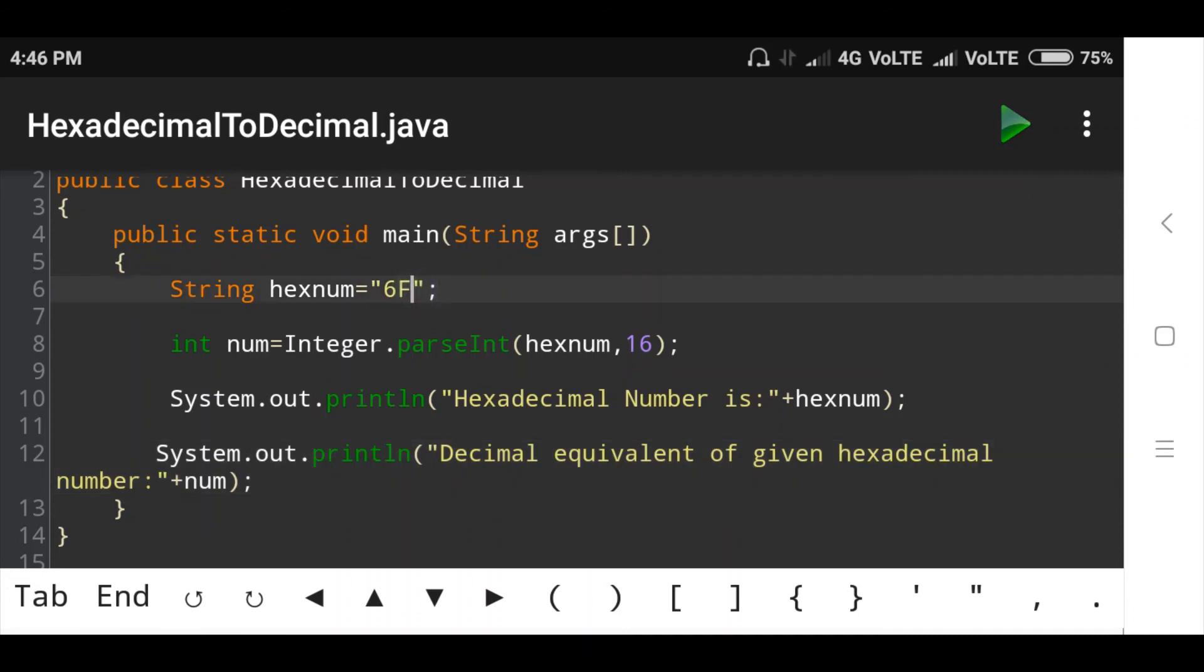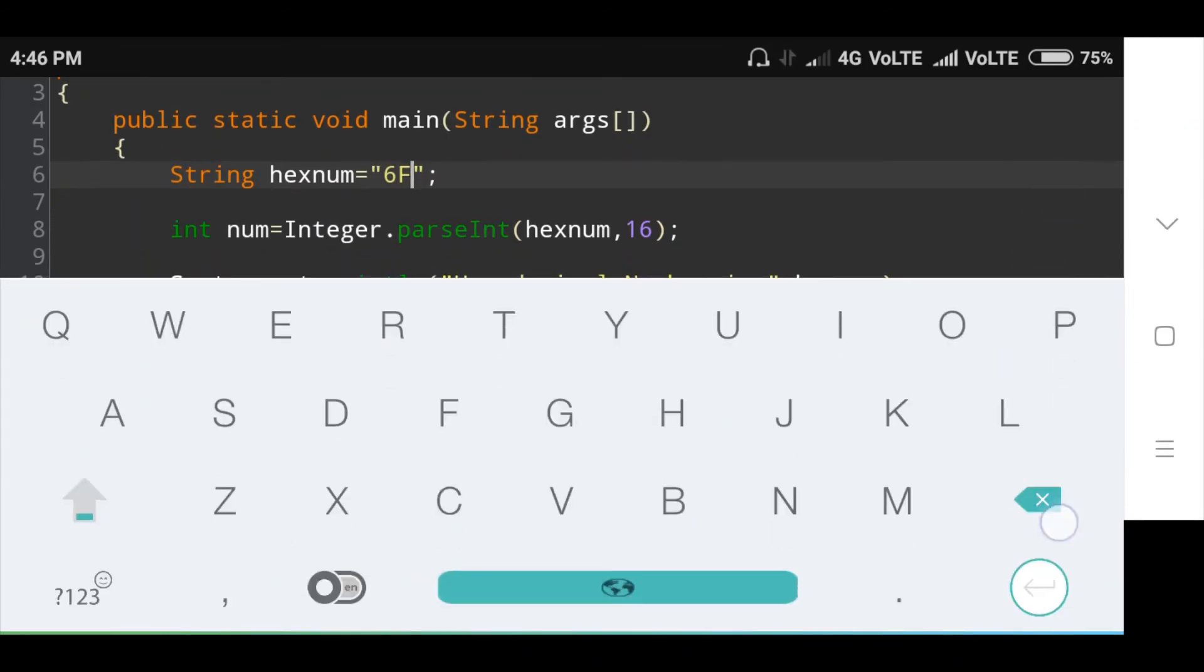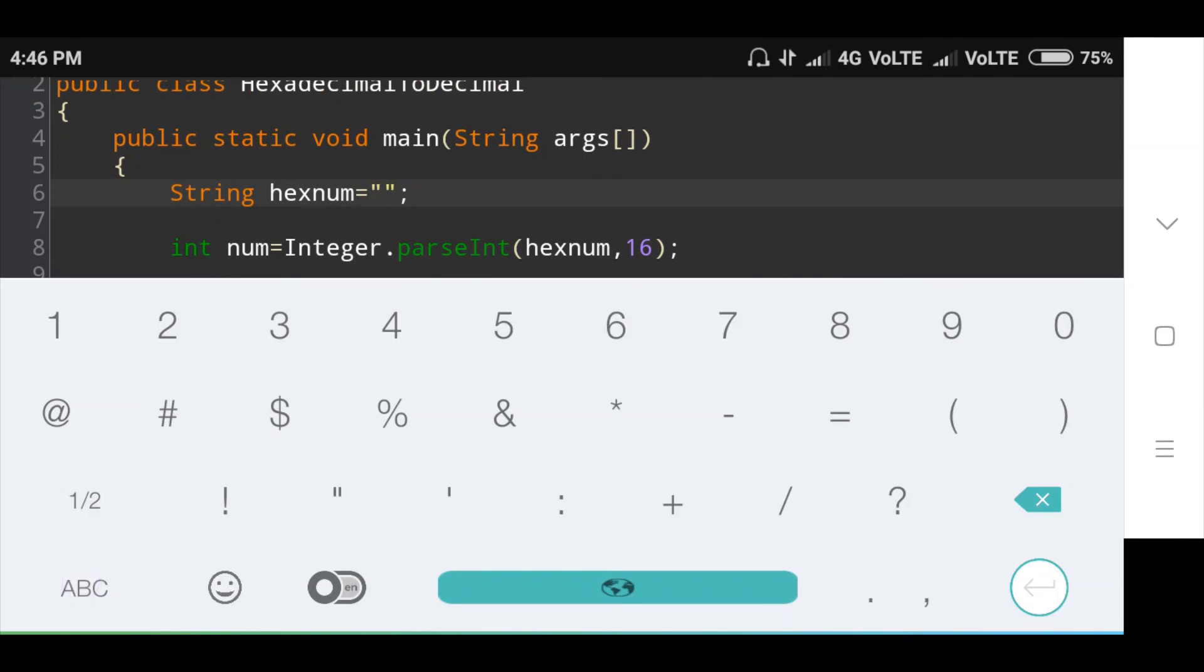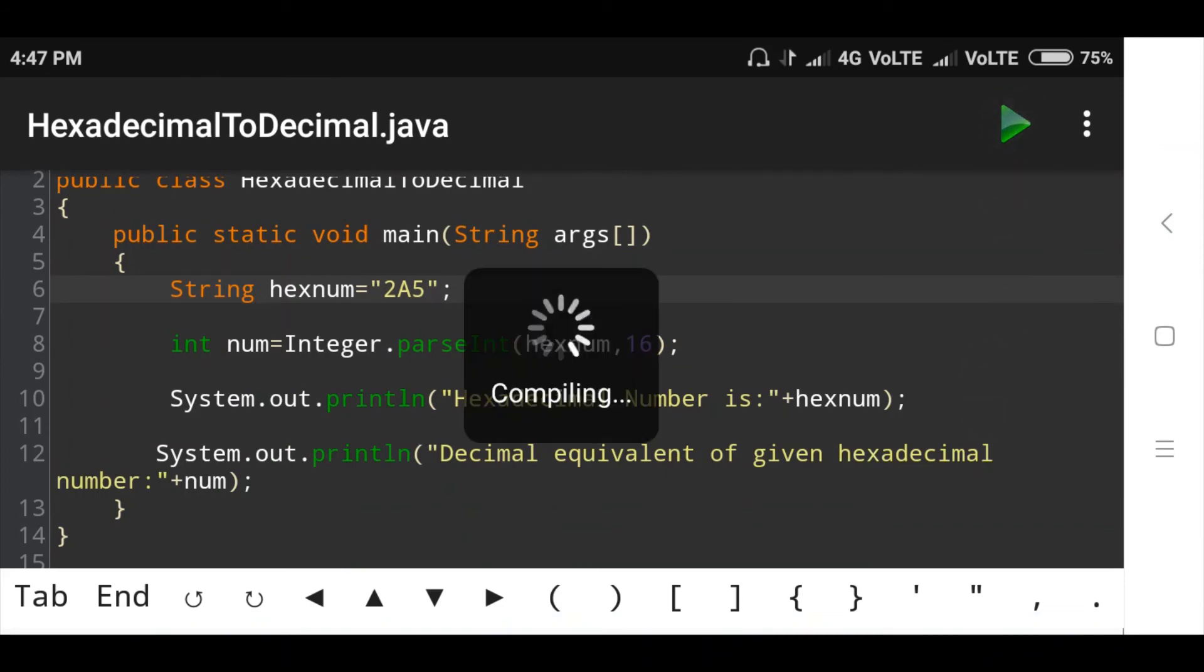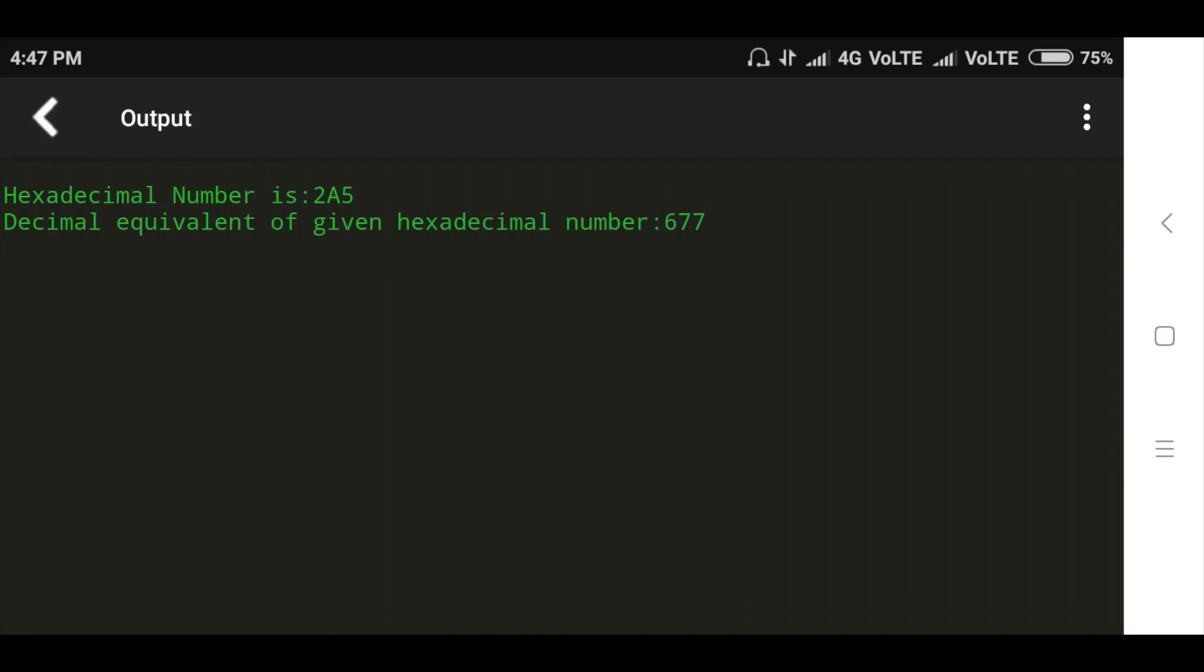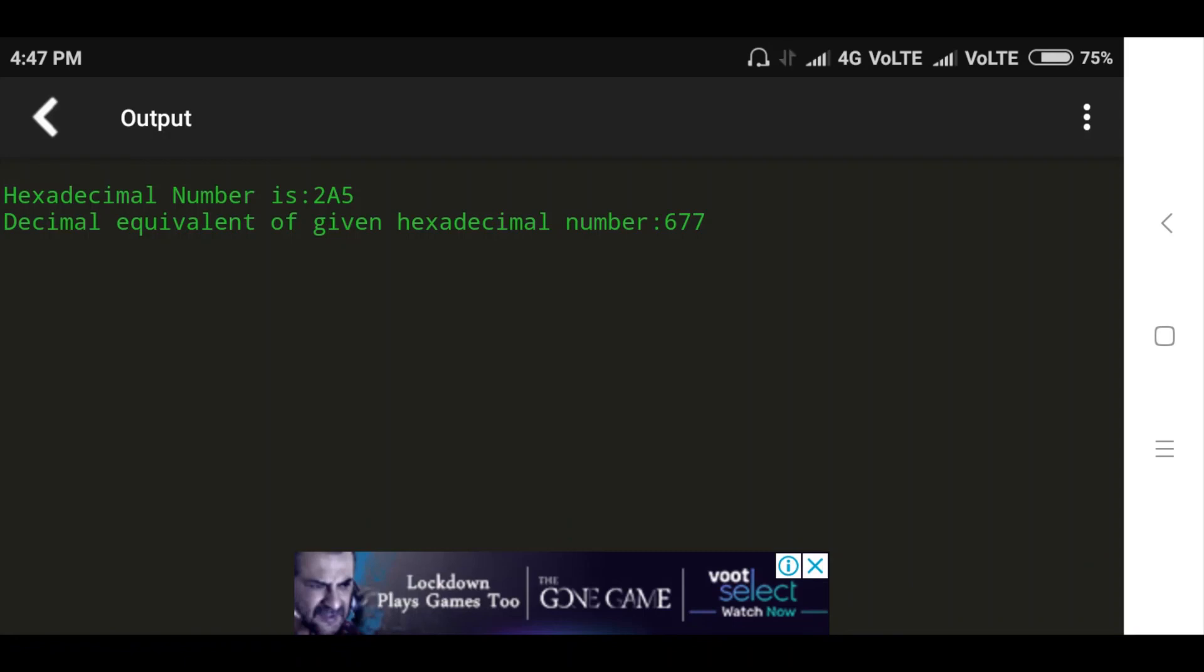Now I will take any value: 2A5. Let's run the program and see the output. Hexadecimal number is 2A5, then decimal equivalent of given hexadecimal number is 677.